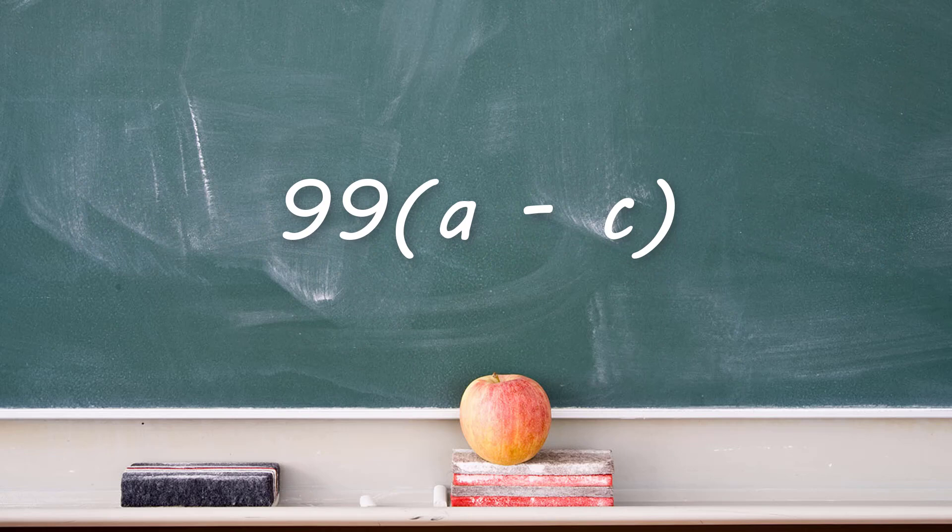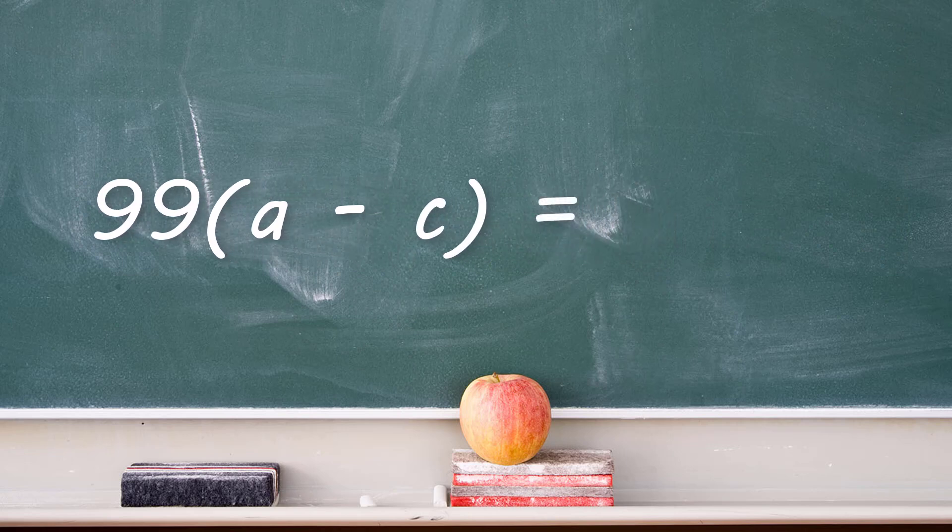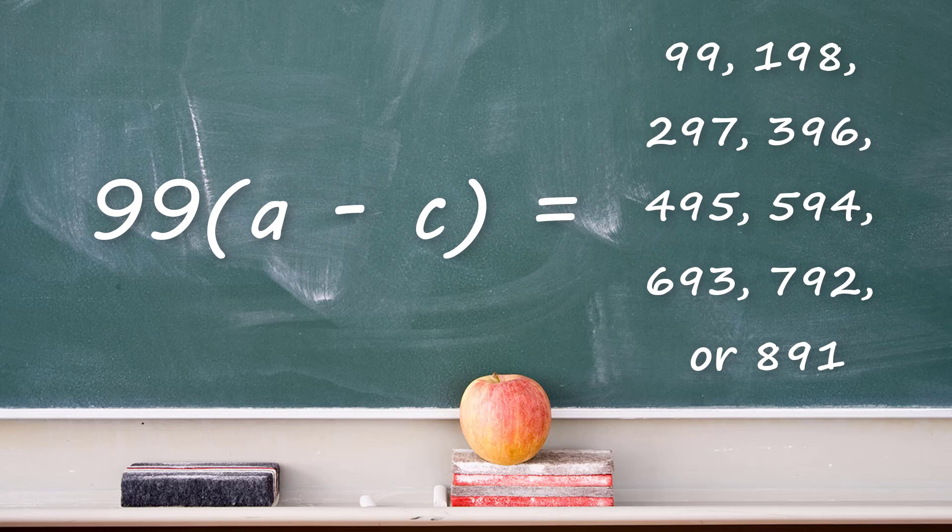This suggests that when you subtract by the reverse number, you always get a multiple of 99. Multiples of 99 are shown on the screen.